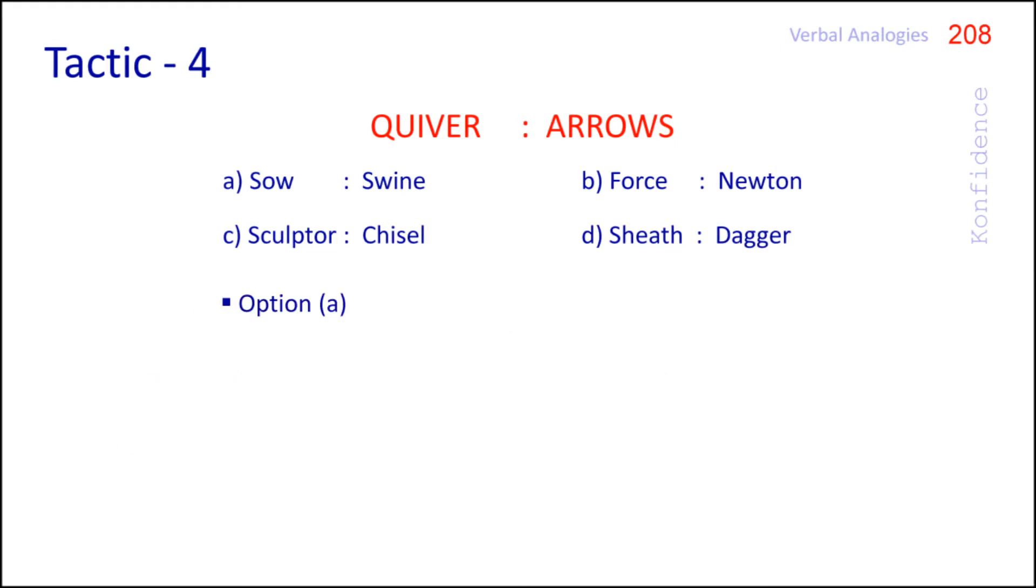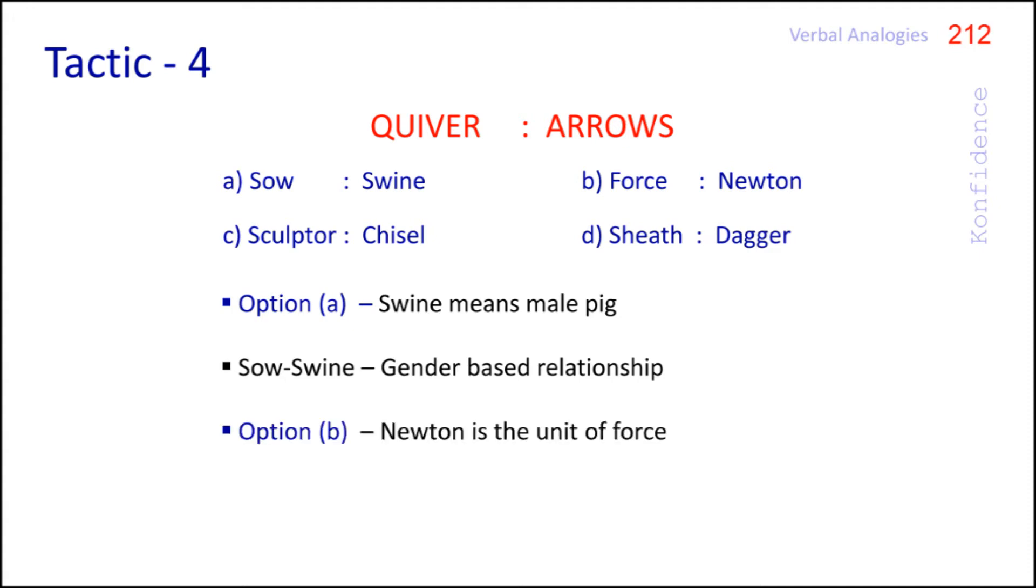As a noun quiver means sheath for carrying arrows. In option A swine means male pig. So the relationship between sow and swine is gender based. In option B Newton is the unit of force. In option D chisel is a tool used by a sculptor. Hence the right answer is option D. Like arrows are kept in a quiver a dagger is kept in a sheath. So by looking at the answer choices we can determine the words part of speech and this will help us to identify the meaning as well as the answer.